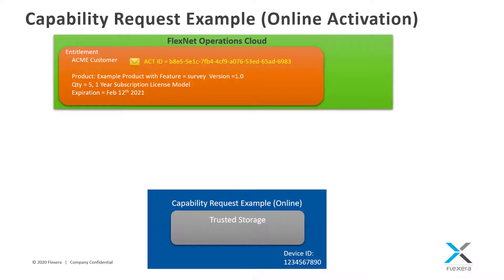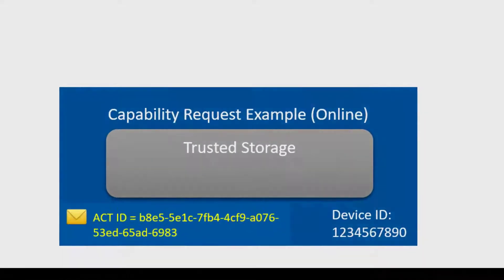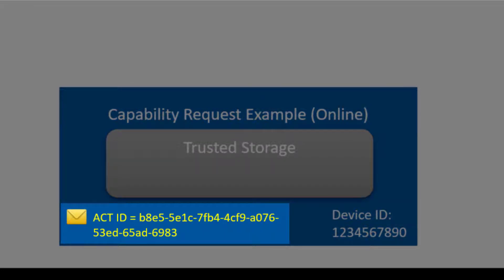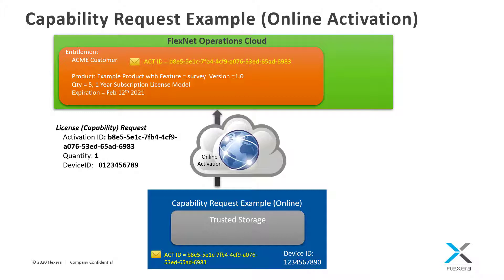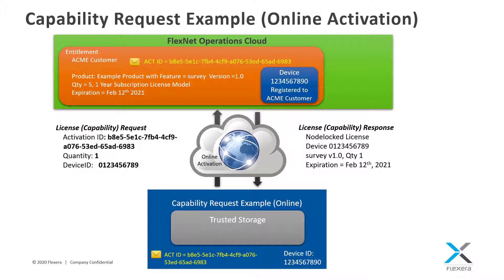Now let's take a look at the capability request example. We'll be using this example to activate or obtain a license from FlexNet Operations in both online and offline scenarios. As with the view example, trusted storage will first be created if it does not already exist. The capability request example will be configured to use the activation ID from the ACME customer entitlement to obtain a license. A capability request will be generated which will contain information such as the activation ID, device ID, and requested quantity. This capability request will be sent over the internet to FlexNet Operations. FlexNet Operations will verify the activation ID and requested quantity are valid. If successful, it will then register the device ID to the ACME customer account and return a capability response to the device. This capability response will then be processed or placed into trusted storage.